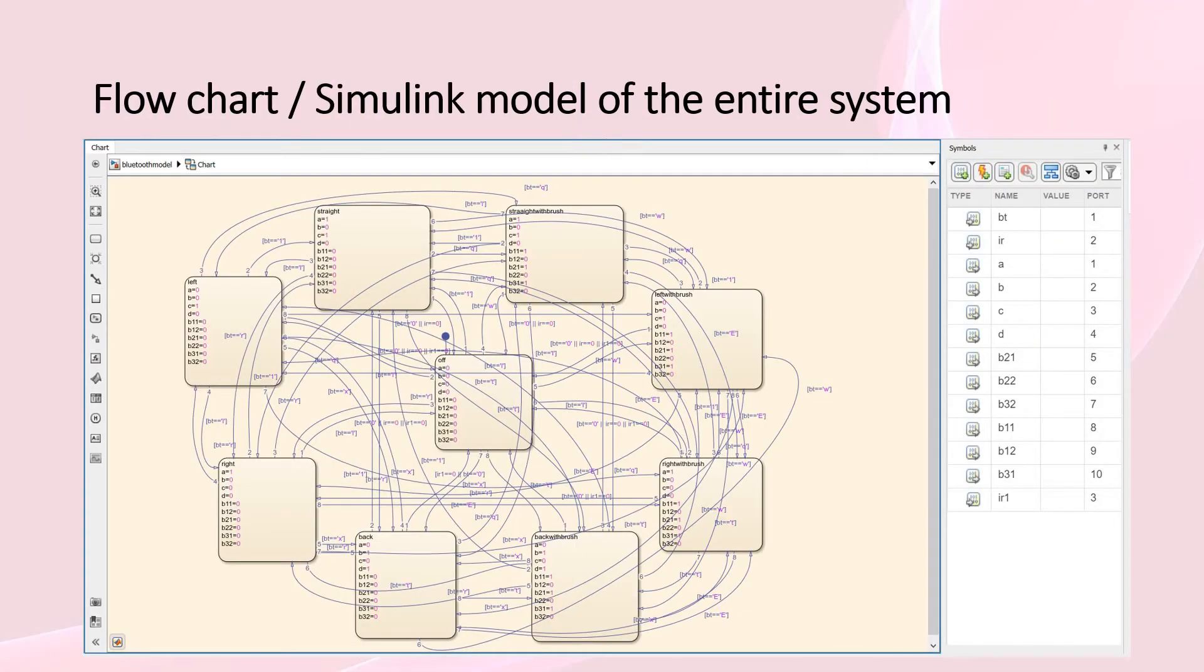Nine states for convenient and easy movement for our bot. That is off, straight, left, right, back, back with brushes, right with brushes, left with brushes, and straight with brushes.